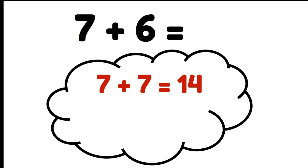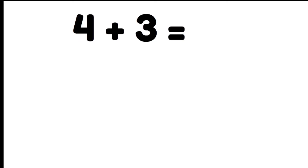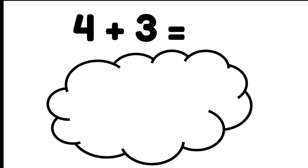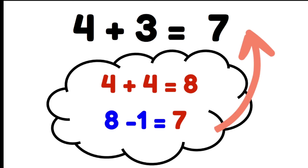Fourteen take away one gives us thirteen, so seven plus six is thirteen. Let's do another one like that: four plus three. We're going to use double four, so four plus four gives us eight. But remember, three is one less than four, so we're going to have to take one away. Eight take away one gives us seven, so four plus three equals seven.